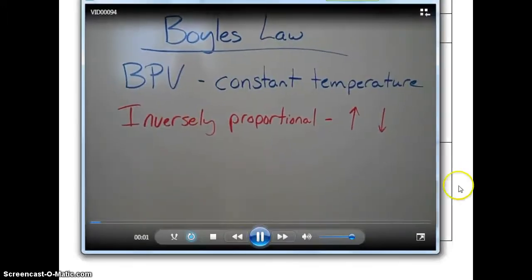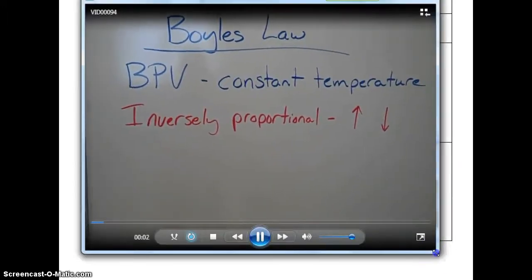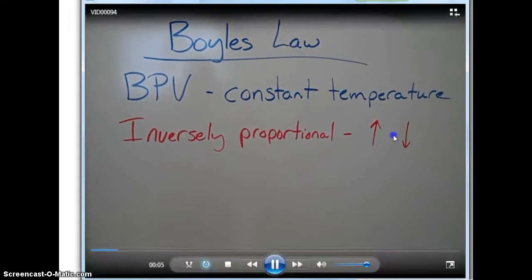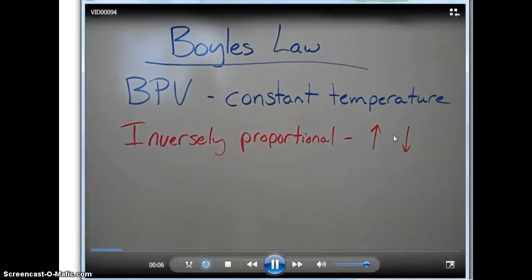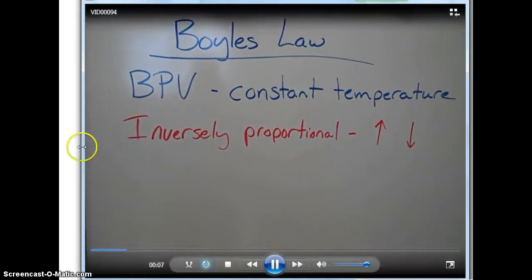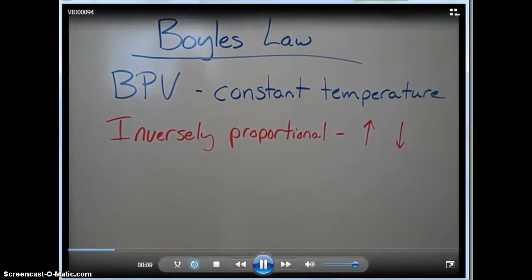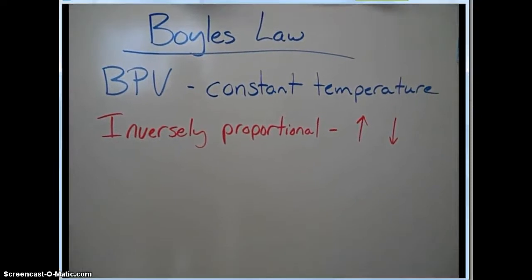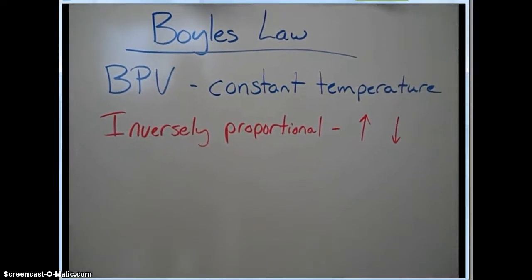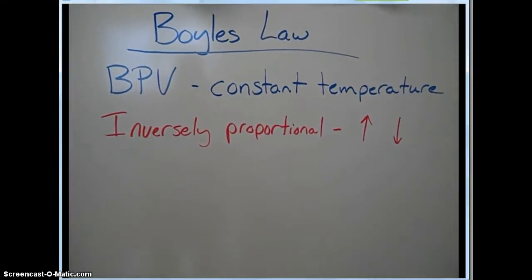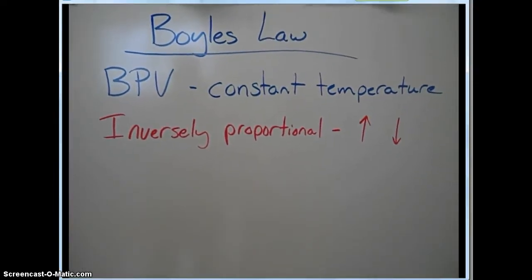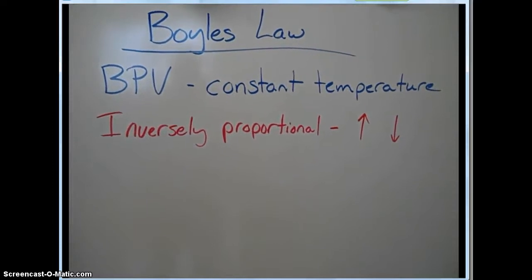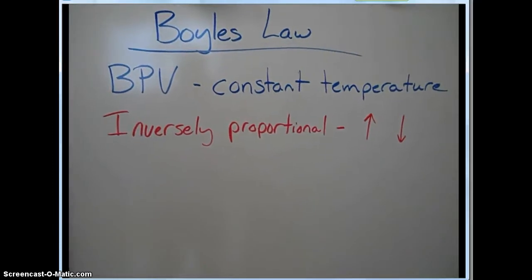Today we're talking about Boyle's Law. Boyle's — BPV — stands for Boyle's, pressure, volume, at a constant temperature. Our variables are inversely proportional, meaning if one goes up, the other goes down. If pressure increases, our volume will decrease. If our pressure decreases, our volume will increase.